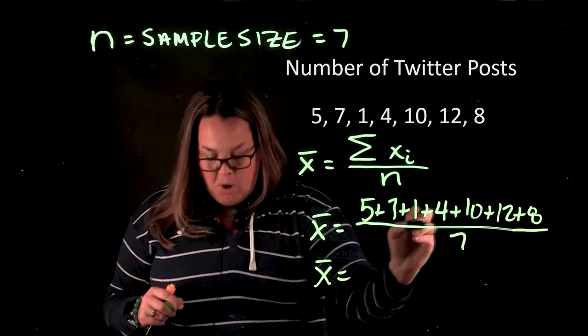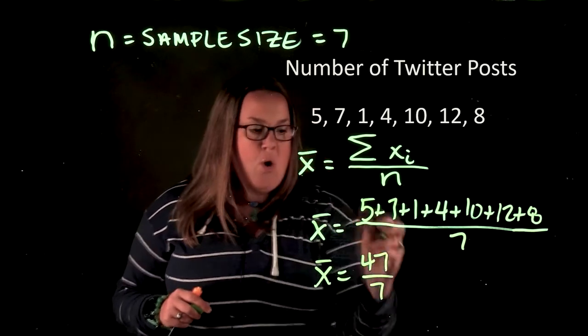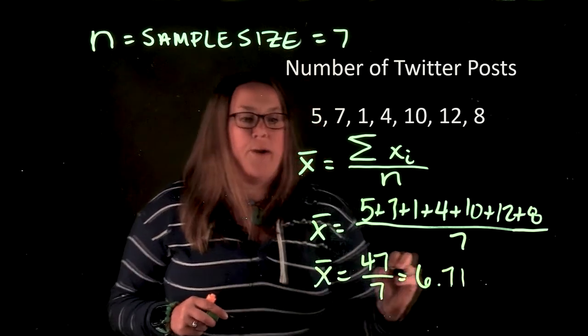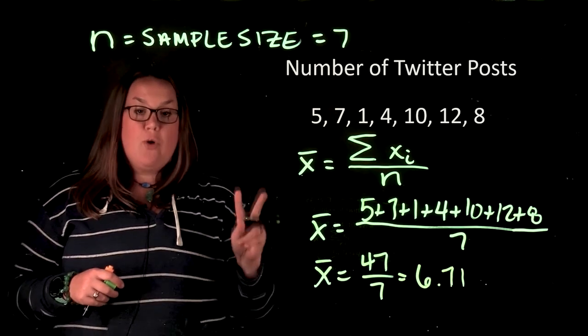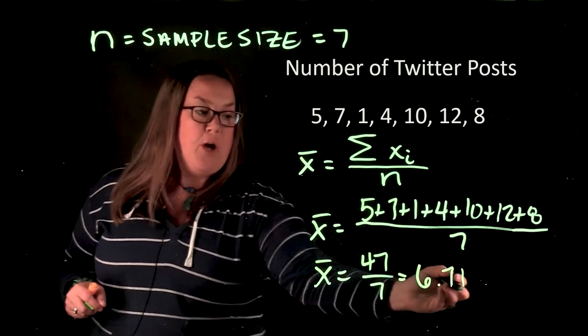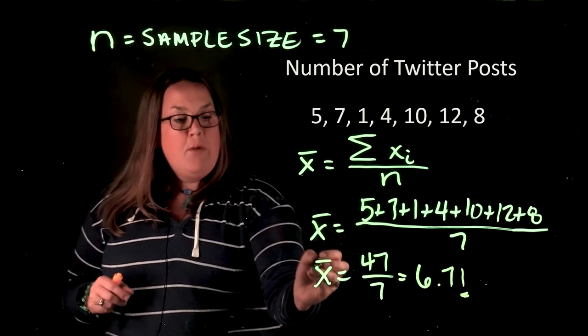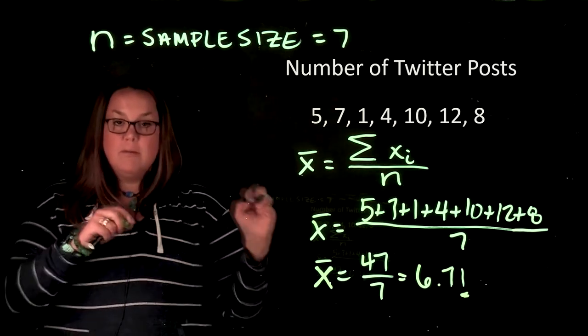If you sum all of these up, they sum to forty-seven. So we have forty-seven over seven, and if we finish that out, we have 6.71 as our X bar. One thing to note with quantitative data: it's best to go out two decimal places, to the hundredths place, when you're calculating things. Remember that this X bar is representing the sample mean.